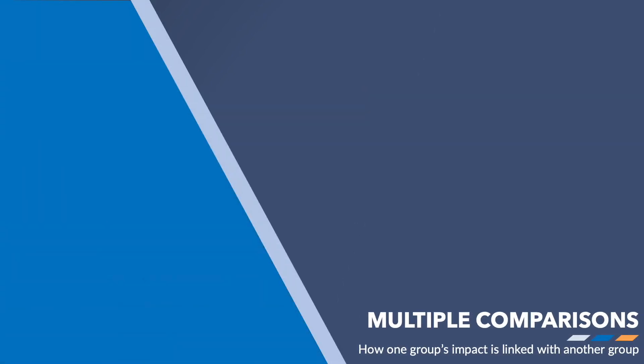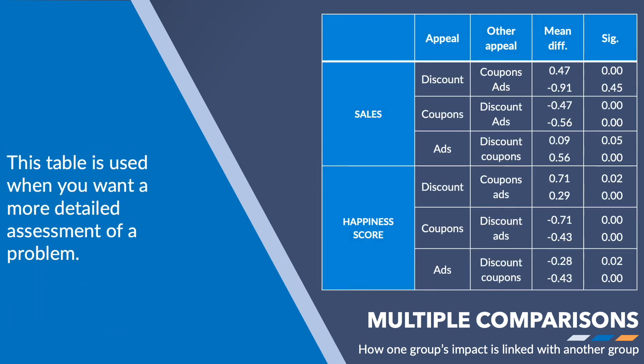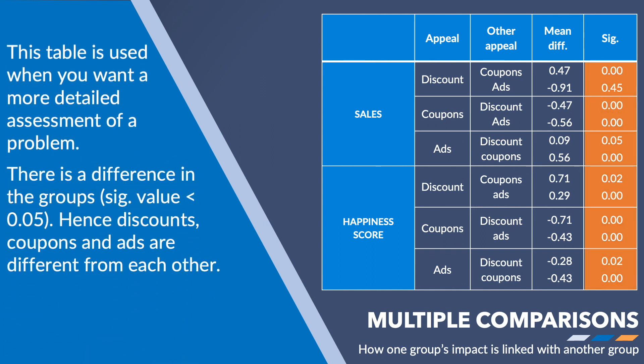The multiple comparison test shows the same group-wise effect as the previous table, but for each element of each group separately. Discount's relationship with coupons and ads, and their combined effect on sales, is shown in the first row. The significance value of each type of promotional activity is presented separately for all the activities. Since the significance value of all the factors is less than 0.05, there exists a relationship between all the promotional activities and both sales and satisfaction score.